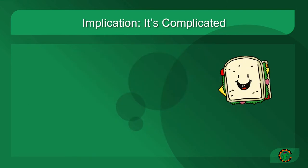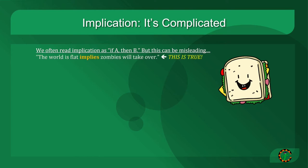Let's talk a little bit more about implication, because it can be complicated. You may hear people read implication as if A then B, but this can be a little bit misleading. The statement the world is flat implies zombies will take over is actually a true statement. But why is that?